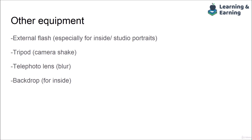Other equipment includes the external flash, especially for inside or studio portraits — it evens out the lighting for the entire photo. Also, a tripod helps with camera shake if your hands are unsteady. Telephoto lenses are better for background blur, which a lot of people like in portrait photos — they're more pricey but worth it if you're going to commit. For inside, just a basic backdrop works — something textured like a tapestry if you don't have an actual studio.